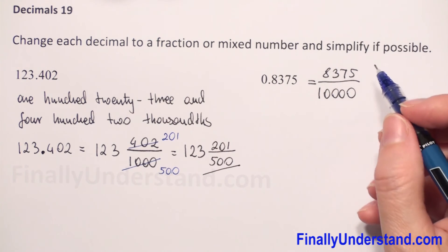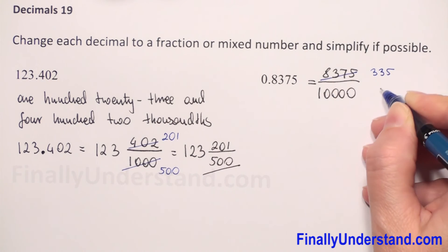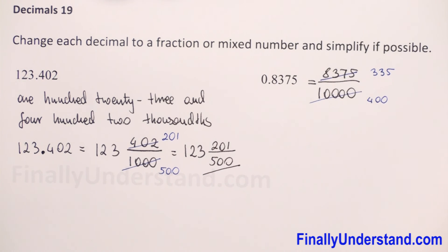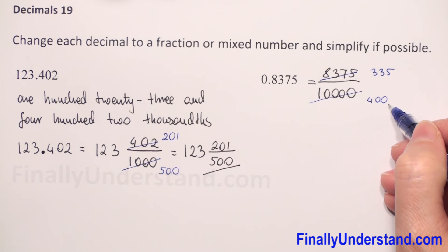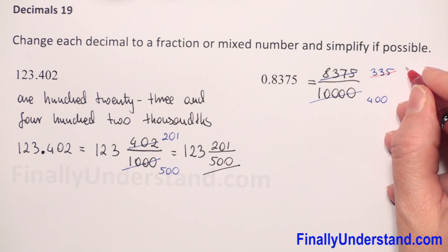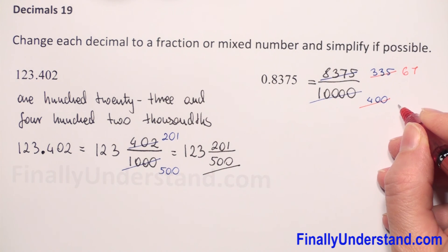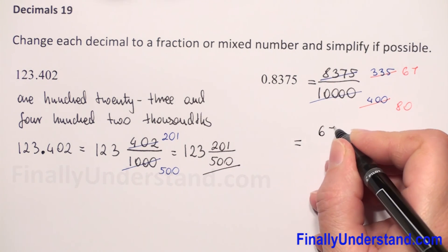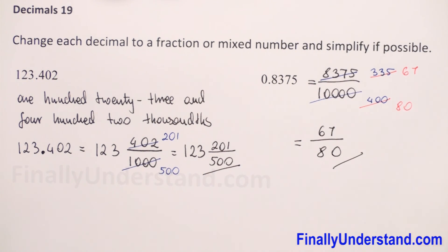Dividing gives us 335 in the numerator and 400 in the denominator. Next, we have 5 at the end and a zero, so we can reduce by 5: 335 divided by 5 is 67, and 400 divided by 5 is 80. So we have 67 over 80 as our final answer. Thank you.